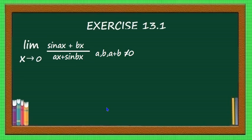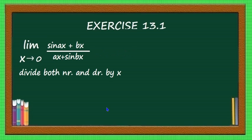Now see this question: limit x tending to 0 of (sin(ax) + bx) divided by (ax + sin(bx)), where a, b, and a + b are not equal to 0. Putting x equal to 0 gives (sin 0 + 0)/(0 + sin 0) = 0/0, which is an indeterminate form. The method is to divide both numerator and denominator by x.